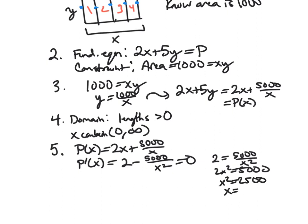And so this means that 2 is 5,000 over X squared. So 2X squared is 5,000. That means X squared is 2,500. And thus, X is plus or minus 50. But of course, again, this is a side length. So it's really just the positive 50 that makes any sense at all here.